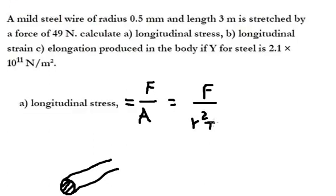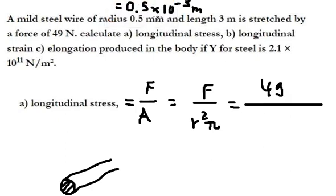So we just put the numbers in. This one we need to convert into meters. So F we have 49, and then we divide by this number to the power of 2, and we multiply by π.